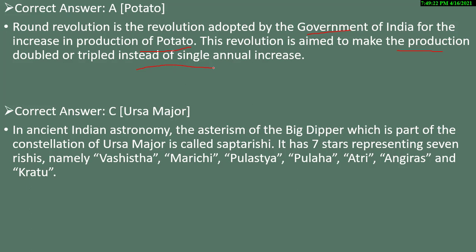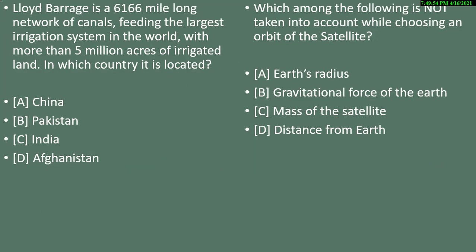Ursa Major — known as Saptarishi — is a part of the constellation of Ursa Major. The stars included in Saptarishi are: Vashishth, Marichi, Pulastya, Pulaha, Atri, Angiras, and Kratu — these seven stars are included in Saptarishi.